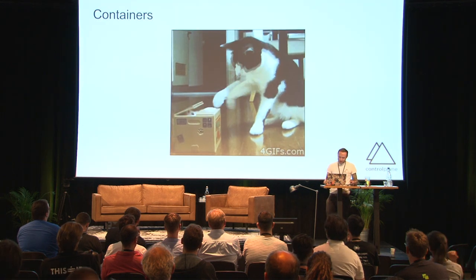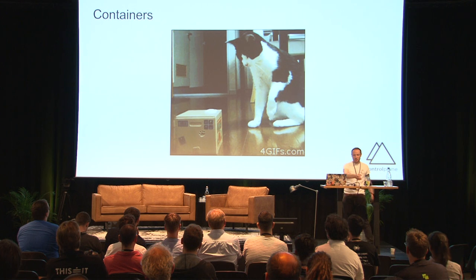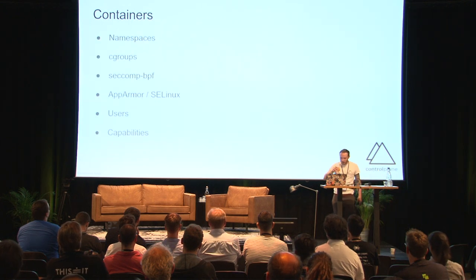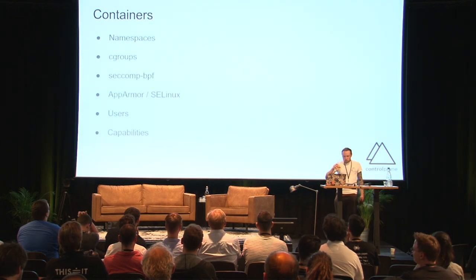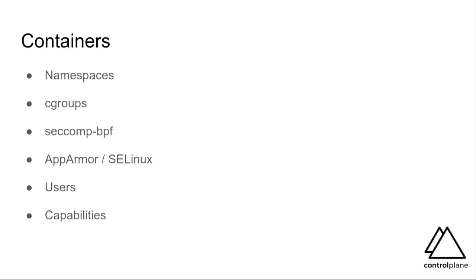Onto securing workloads. Containers form the basis of the Kubernetes security model — I hope everybody recognizes these kernel primitives. These are the mechanisms that we use for layering defense in depth on our running workloads and on some of the control plane components. There are still some non-namespaced resources in the Linux kernel: the system time, the kernel keyring, the audit log, DNS, devices, some of the contents of /proc.